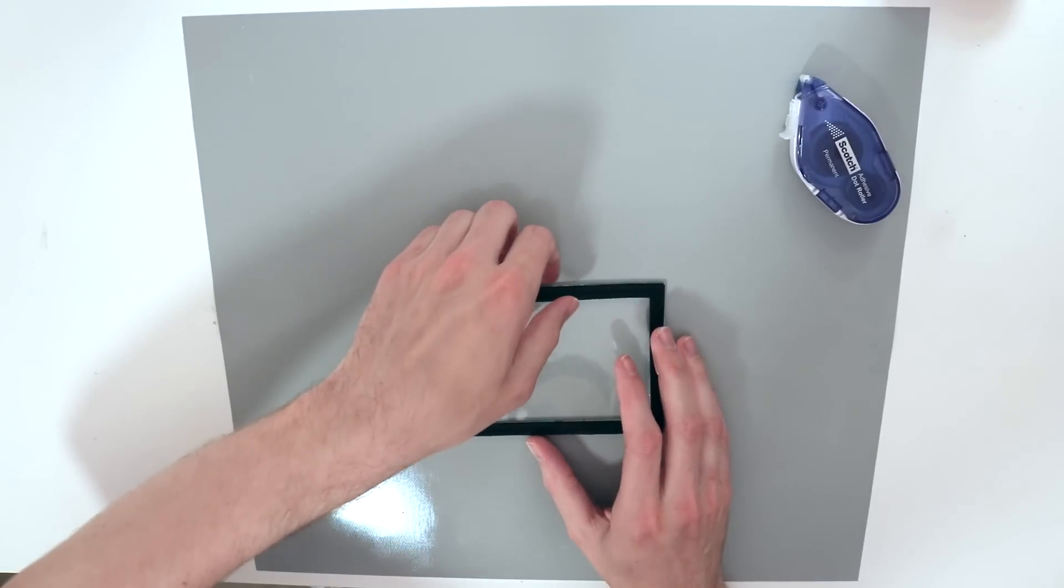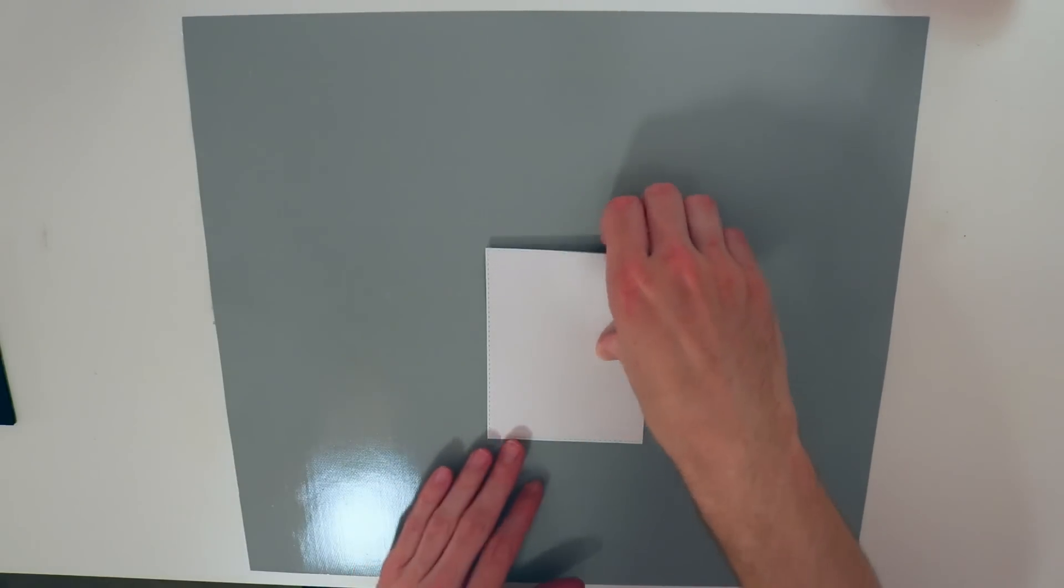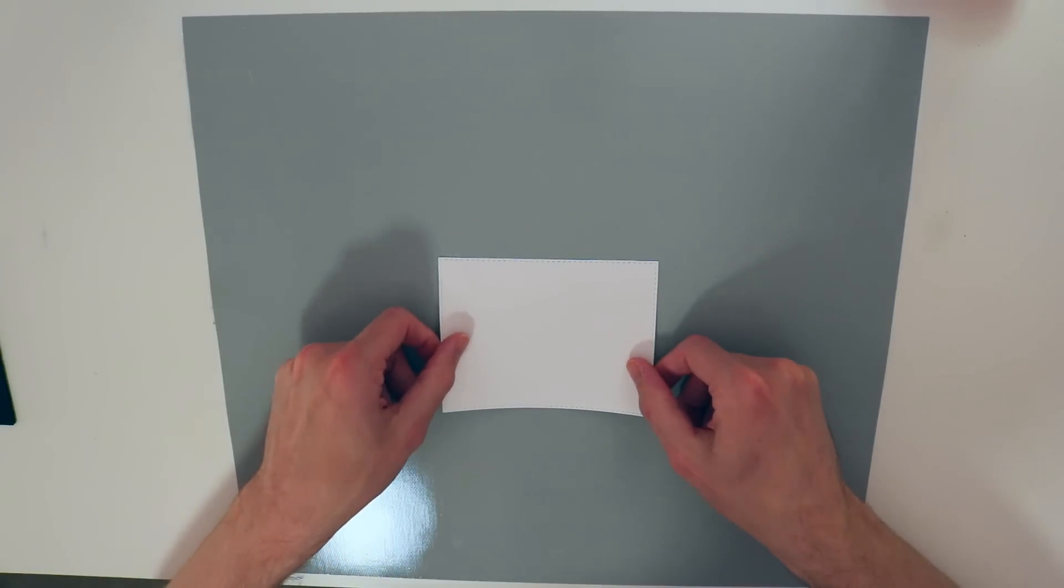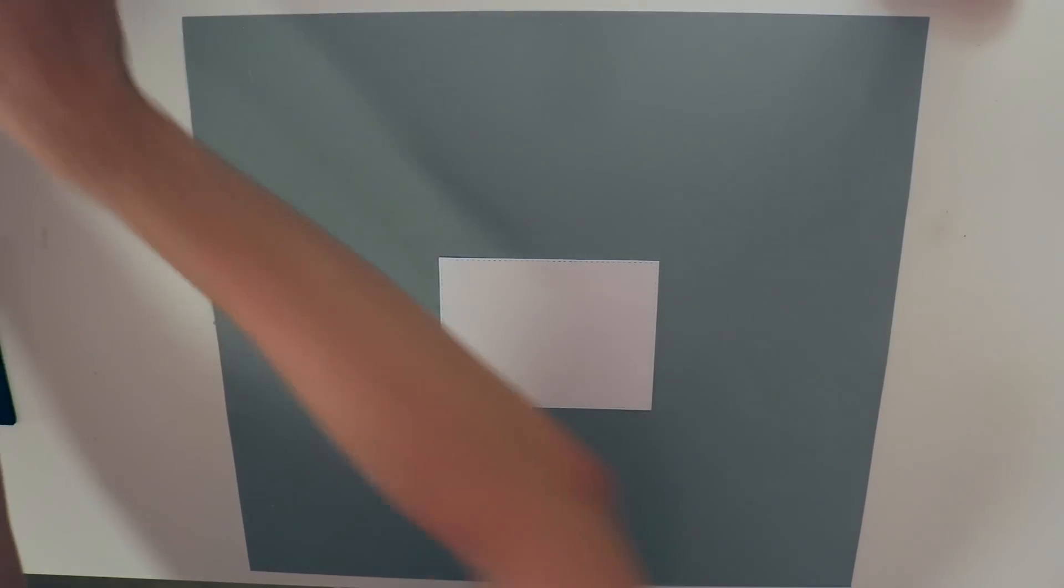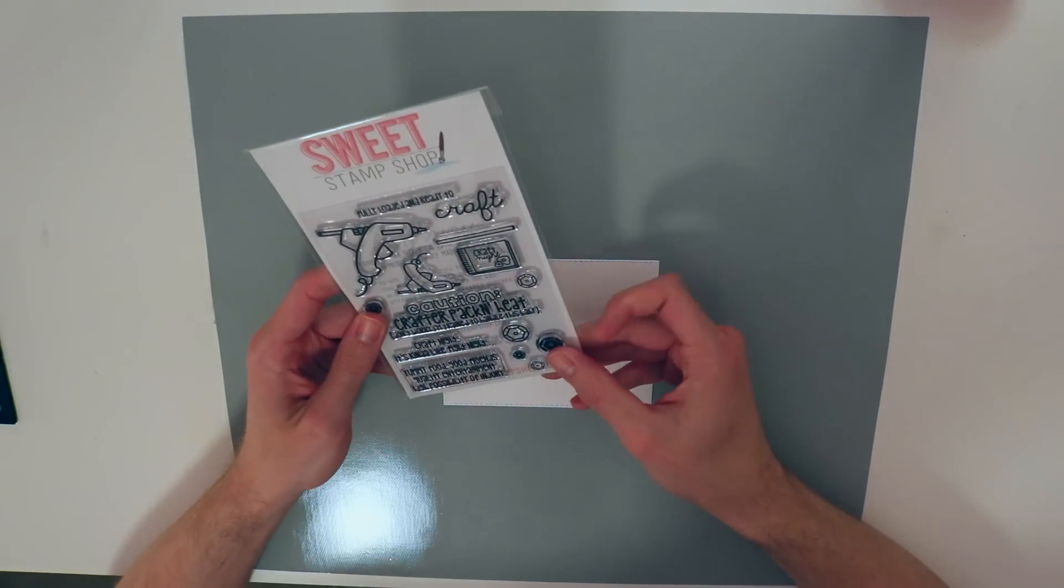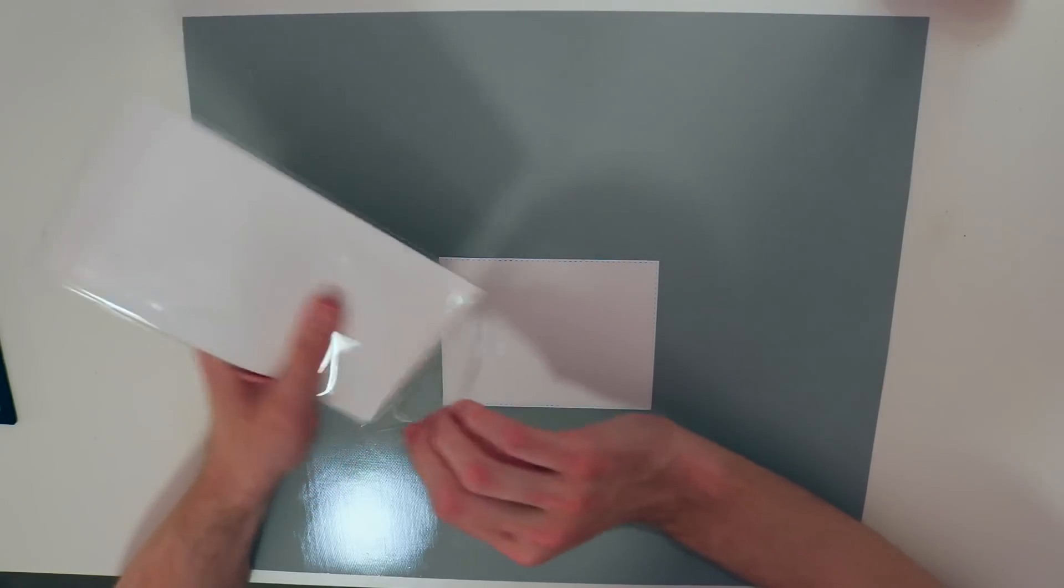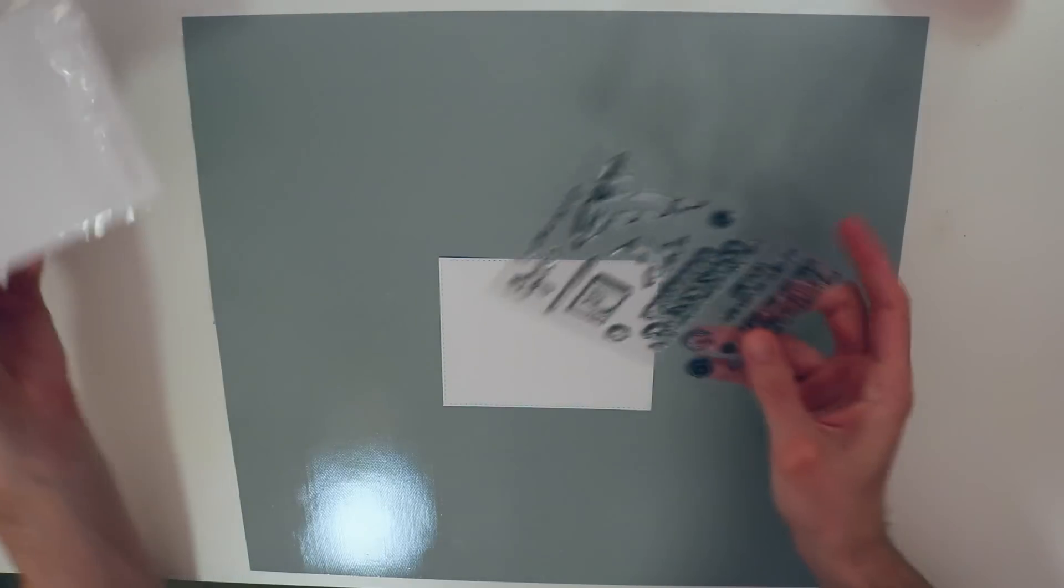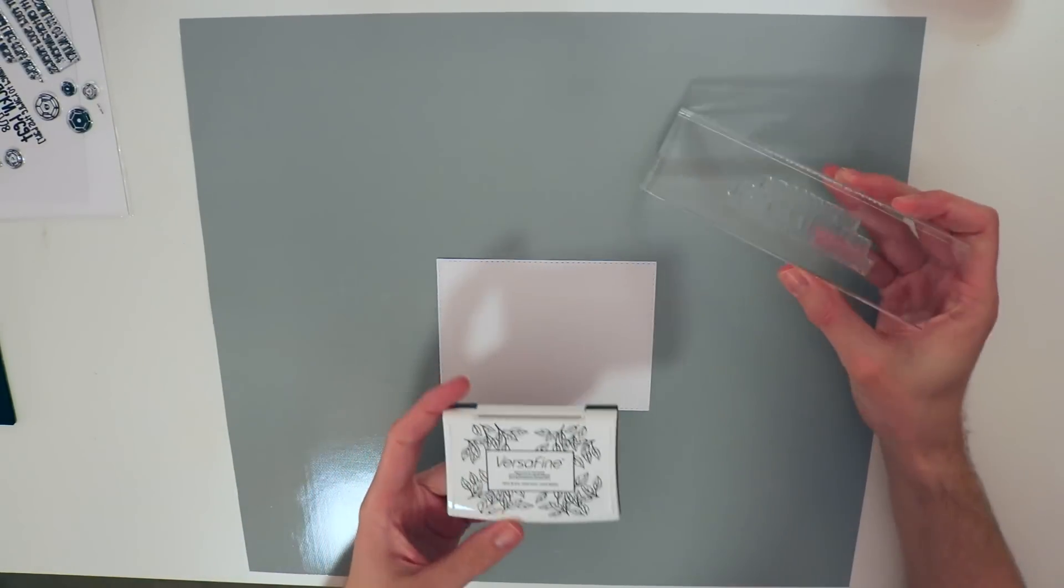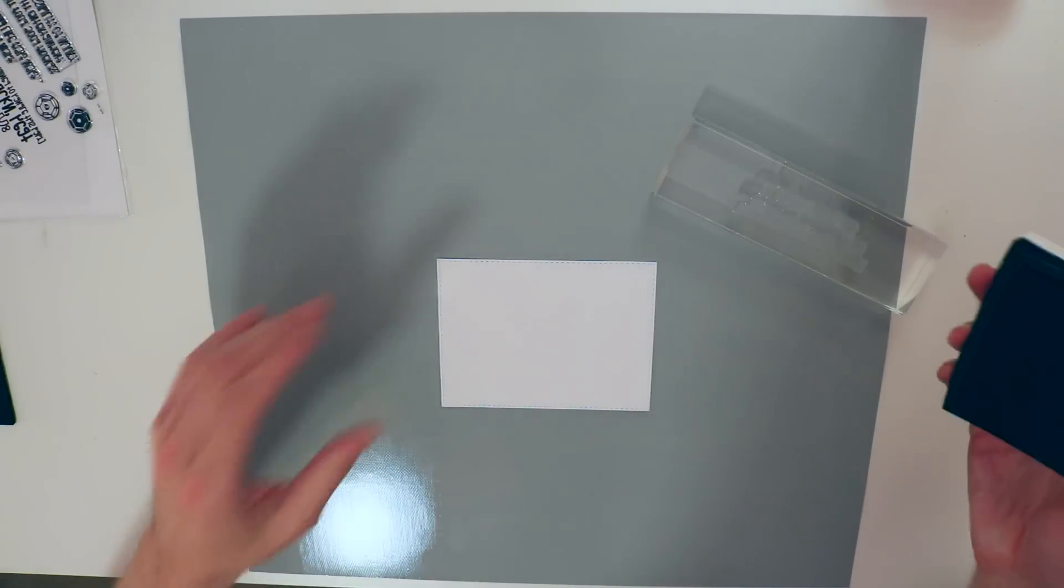So now we're going to set this off to the side so it can dry. I'm going to start getting my back panel all ready to go. I want to stamp the Caution Crafter Packing Heat sentiment. I'm going to use my VersaFine to ink up the sentiment and stamp it onto my panel.